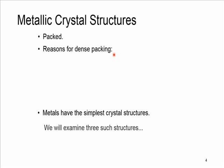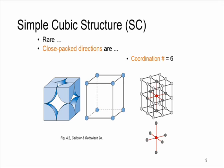Generally metals have the simplest crystal structures, and we will discuss three types. The first type is a simple cubic structure, known as SC. This is rare due to low packing density — you can see there are lots of space left between these atoms. Only polonium has this structure. The close-packed direction, the direction with the highest number of atoms, is along cube edges as you can see here.